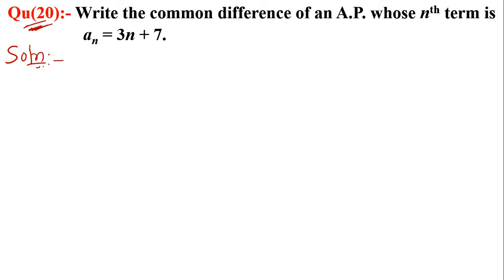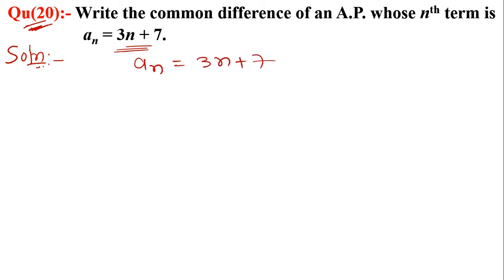Question 20: Write the common difference of an AP whose nth term is aₙ = 3n + 7. In this question, the nth term is given as aₙ = 3n + 7. First, we put the value of n = 1: 3 × 1 + 7 = 3 + 7 = 10.